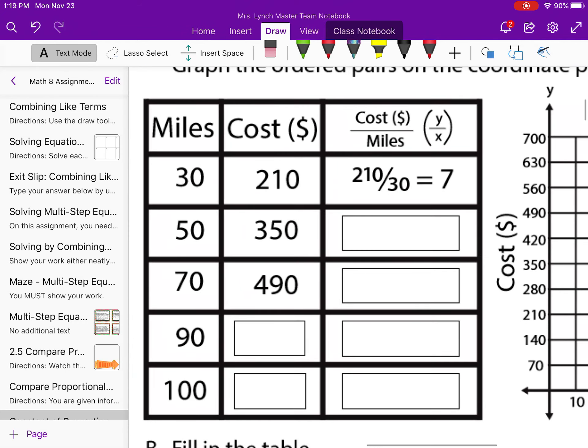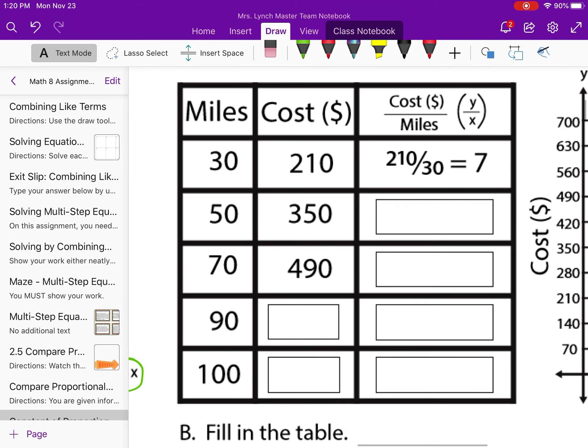50 miles cost $350. So I'm going to zoom in as much as I can to write. So again, you're just going to write the division. Please write it as neatly as you can. So $350 divided by 50 is also going to equal $7. $490 divided by 70 is going to equal $7.